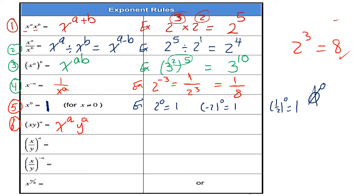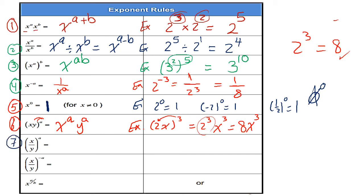Rule number 6: (XY) to the power of a equals X to the power of a multiplied by Y to the power of a. In this case we distribute the power. For example, (2x) to the power of 3: I distribute the power to get 2 to the power of 3 multiplied by x to the power of 3. Since 2 to the power of 3 is 8, the simplified form is 8x to the power of 3.